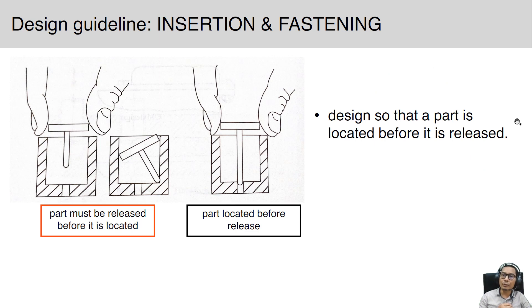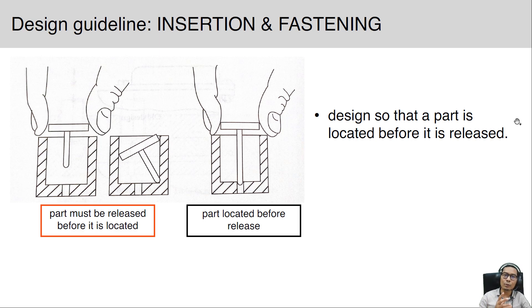Design so that a part is located before it is released. In the first figure, the part must be released before it is located — when you release the part, it might miss the targeted hole and become misaligned. In the second design, a pin or nail shape allows the part to be located before you release it, so your finger still has clearance before releasing the cap of the pin. This is a good design example compared to the bad design, to ease insertion and fastening.